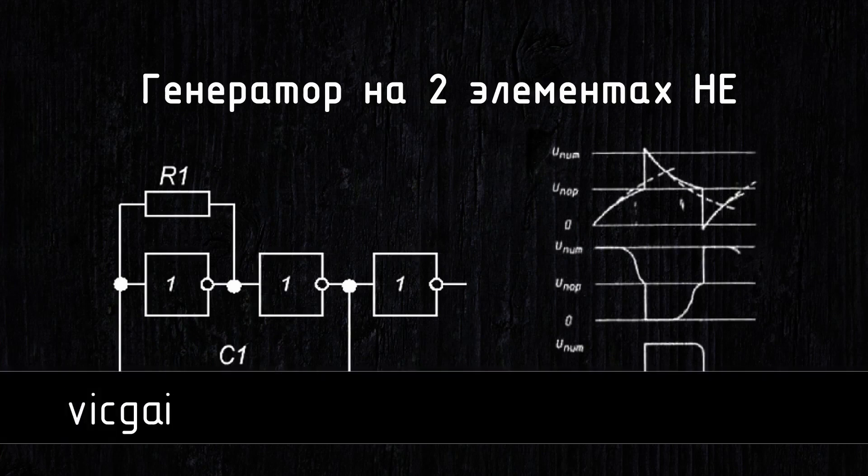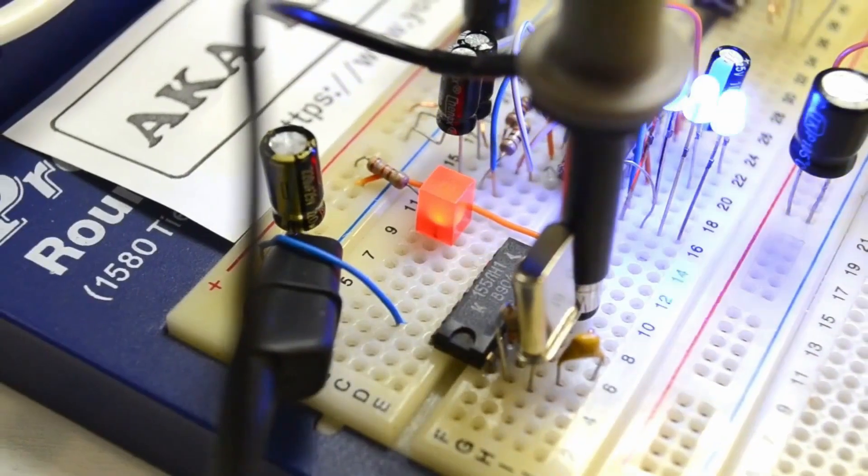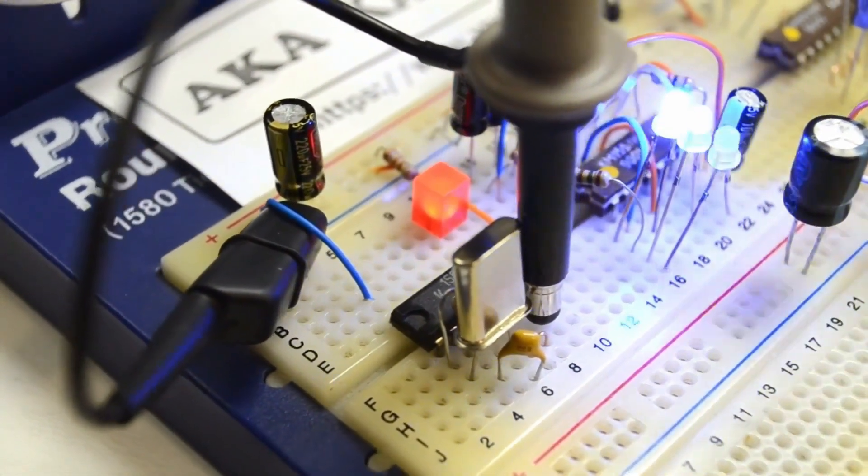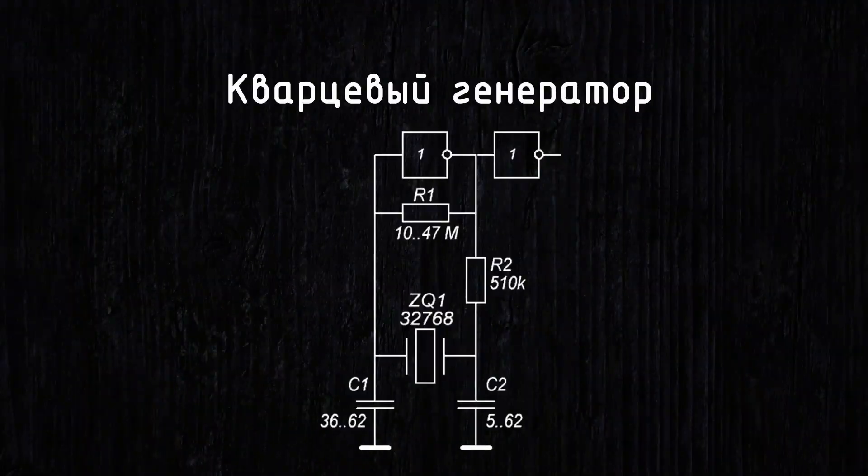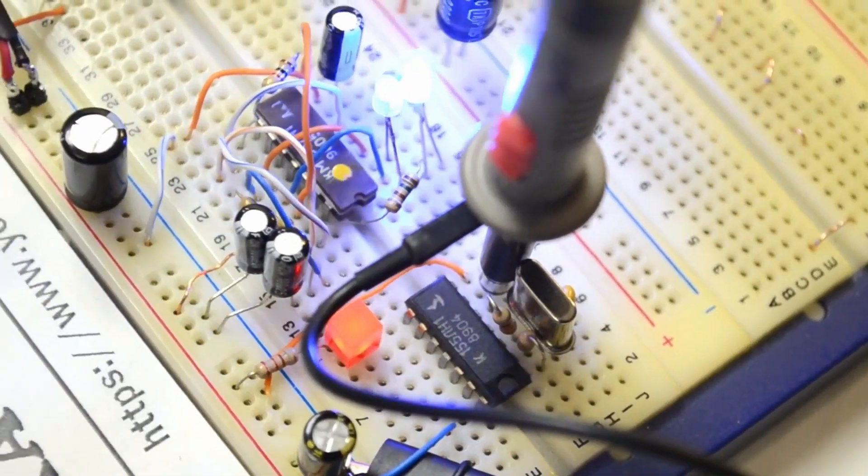You can read more about the operation of these circuits on the Amateur Radio Electronics website. With a quartz resonator available, you can assemble a generator using the following circuit. By varying the resistance and capacitance, you can achieve precise frequency tuning. But again, you need to have a frequency meter or an oscilloscope on hand.